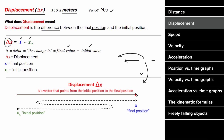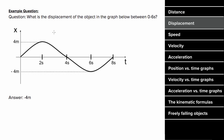What does an example problem for displacement look like? If you were given this graph and asked to find the displacement of the object between zero and six seconds, you wouldn't care that the object moved forward and backward and changed directions. All you would focus on is that the initial position was zero, the final position at six seconds was negative four, so the displacement was negative four meters, since you ended four meters behind where you started.